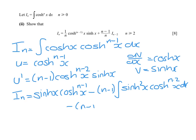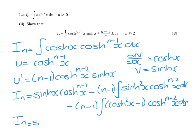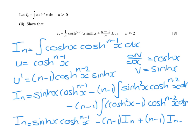Since cosh squared minus sinh squared equals 1, sinh squared equals cosh squared x minus 1. What we can now see is that I_n equals sinh times cosh to the n minus 1, minus n minus 1 times cosh squared times cosh to the n minus 2, which is cosh to the power n, so that is I_n plus n minus 1 times I_{n minus 2}.